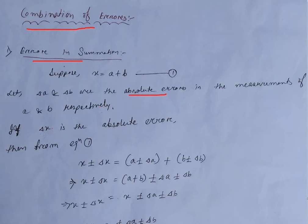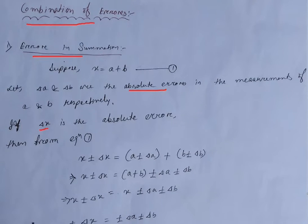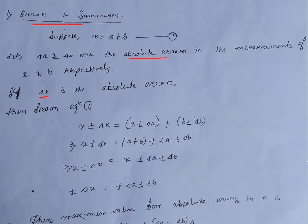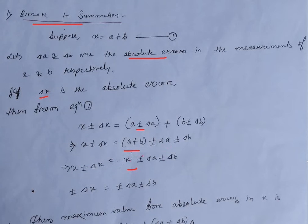then del x is the absolute error in the measurement of x. The true value of x should be equal to a plus b. So x plus-minus del x is equal to (a plus-minus del a) plus (b plus-minus del b). Simplifying: x plus-minus del x equals (a plus b) plus-minus del a plus-minus del b. Since a plus b equals x, we can cancel them out.